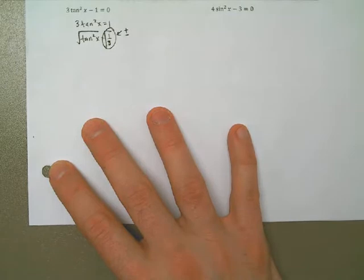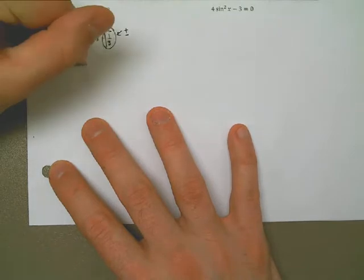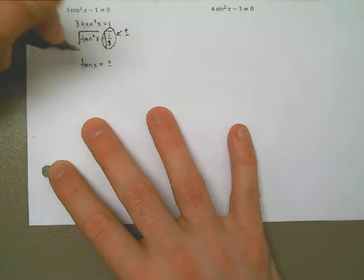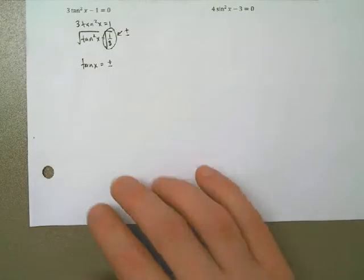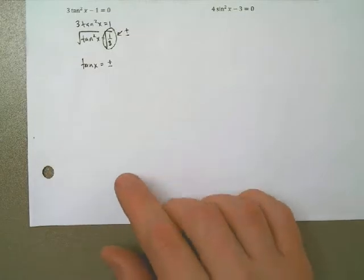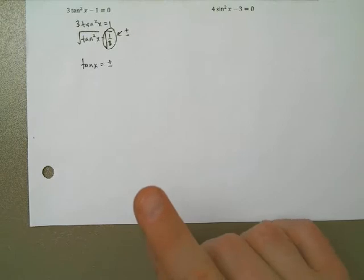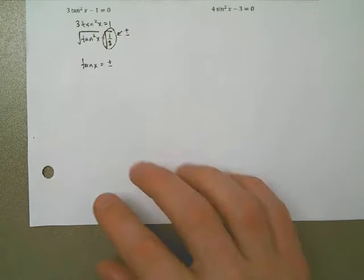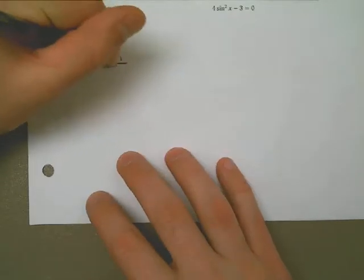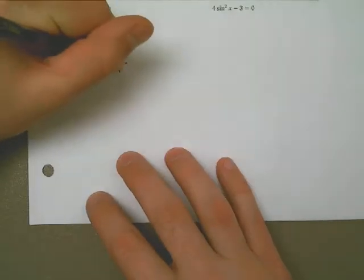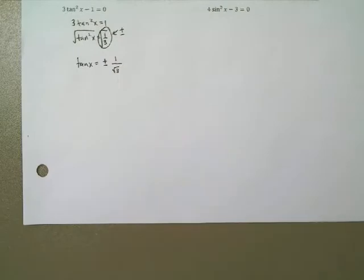So the tangent of x is equal to plus or minus — now the square root of 1 over the square root of 3. I can break that up into two separate square roots if I want to. The square root of 1 is just 1, no reason to write that. The bottom is square root of 3, and that's an irrational number, so we leave it like this. I'm looking then for an angle where if I were to put that angle in, I would get either a positive or negative value.